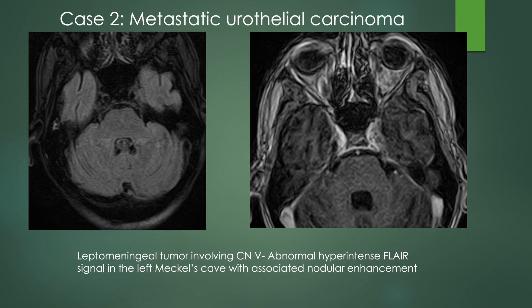Case two: this is metastatic urothelial carcinoma. Looking at the FLAIR on the left side of the image, you're looking for any abnormal hyperintensity where it's not supposed to be. There is bright signal within Meckel's cave, which should just be filled with CSF — cranial nerve 5 is traversing through there. On the post-contrast images, you see nodular enhancement within Meckel's cave along cranial nerve 5. This is leptomeningeal spread of metastatic urothelial carcinoma involving cranial nerve 5 in Meckel's cave.